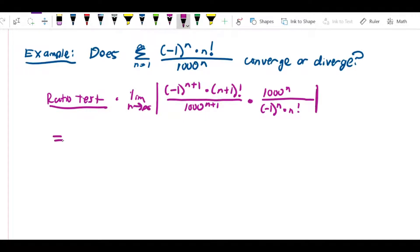So let's simplify this a bit. First of all, this is going to be the limit as n approaches infinity. Let me put like terms over like terms - that'll be easier to see the cancellation. So that's going to be negative 1 to the n plus 1 over negative 1 to the n, times 1000 to the n over 1000 to the n plus 1, and then n plus 1 factorial over n factorial.